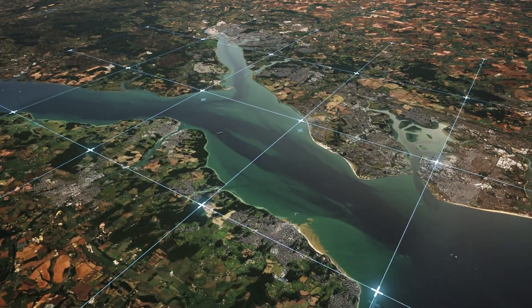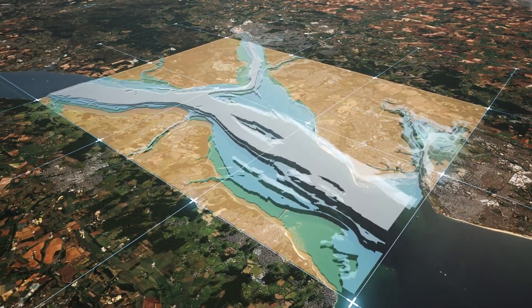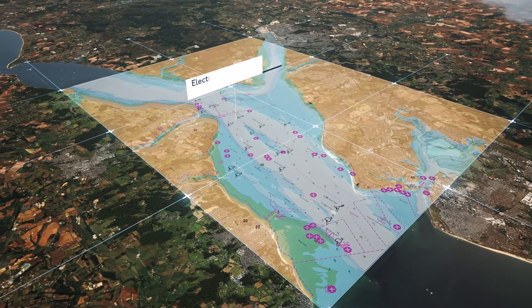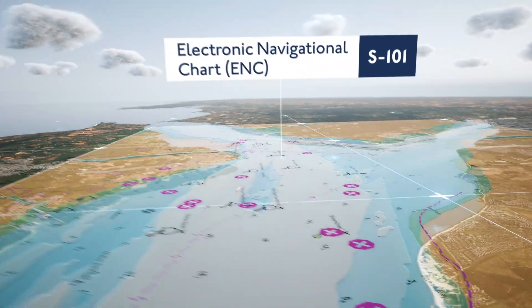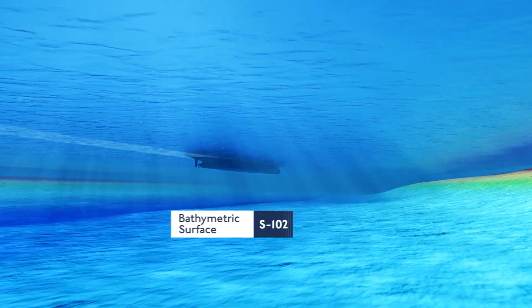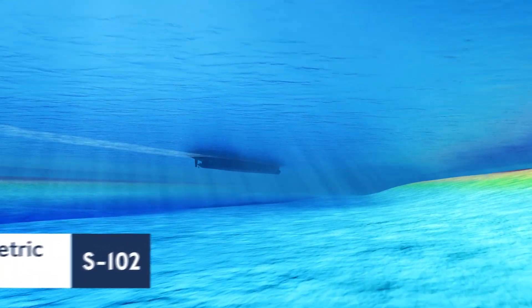S100 standards are broken down into different layers. We have the S101 electronic navigation chart, S102 bathymetry — that's the topography of the ocean bed — and then we have S104 and S111.